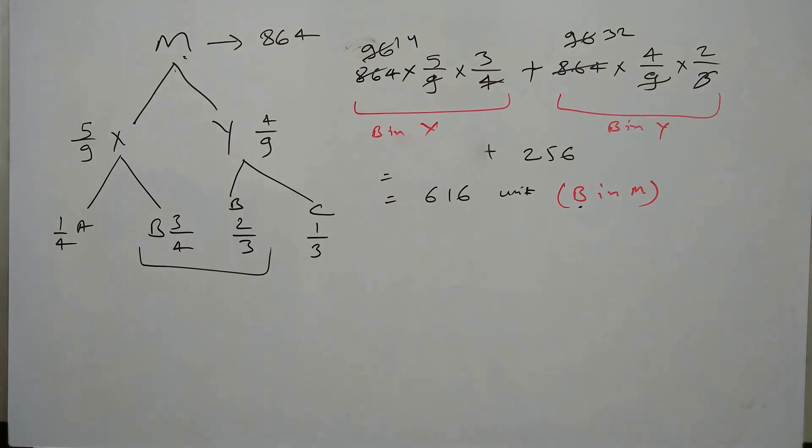So B is 50% of that. Then the total mixture will be B is 50% of that mixture. So that means total mixture will be 616 into 2. So it will be 1232 units.